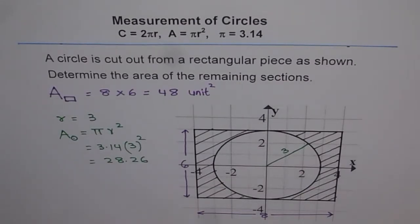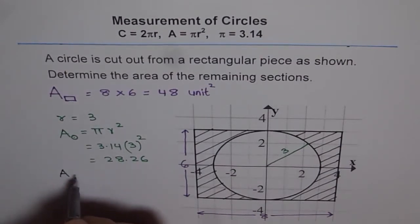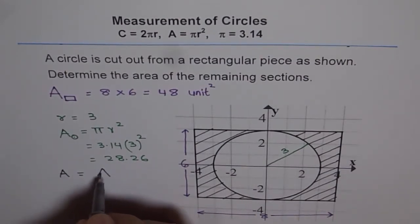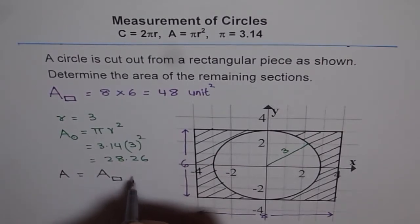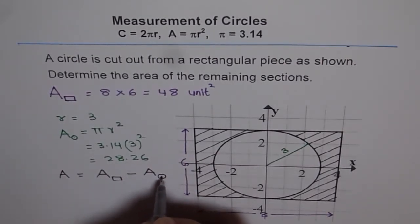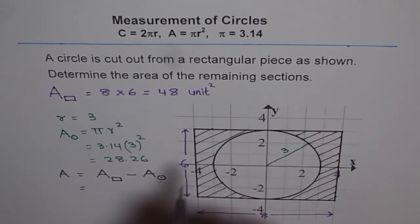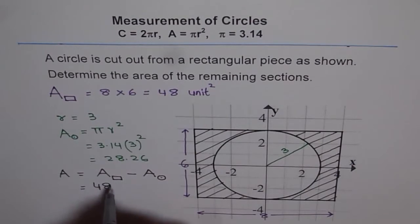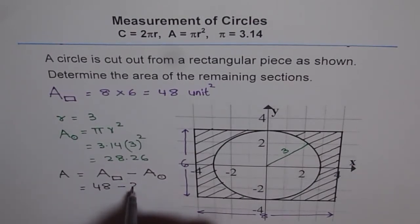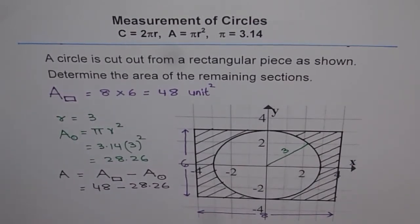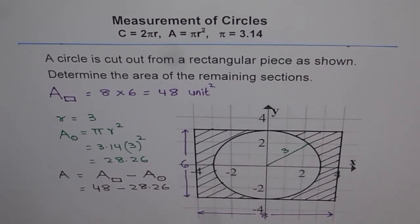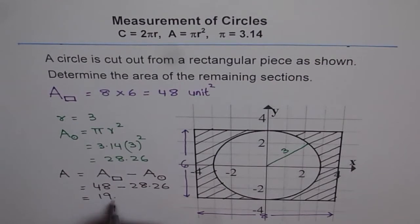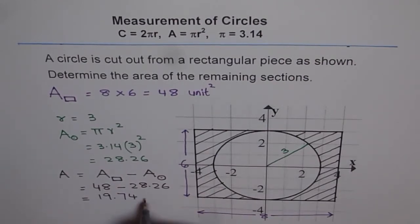Now we can find the area of remaining section. We say area of remaining section is equal to area of rectangle take away area of circle, which is 48 take away 28.26. Let's calculate 48 take away 28.26. We get 19.74 square units.